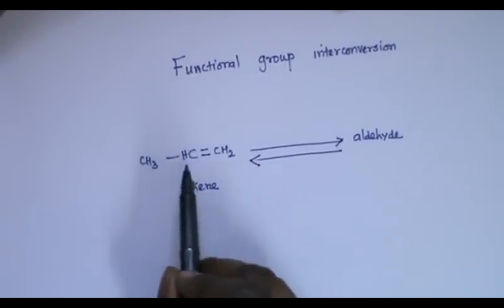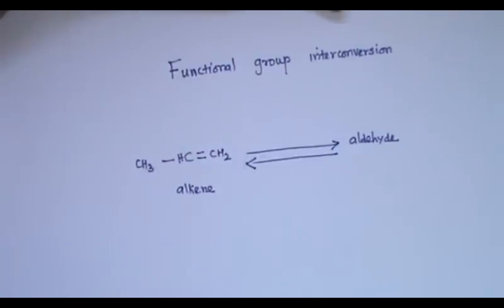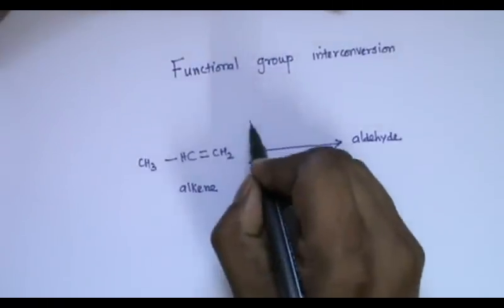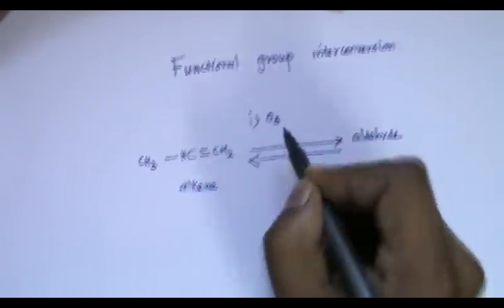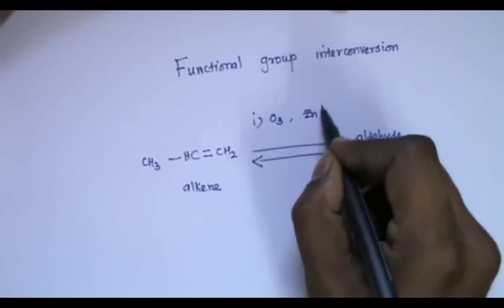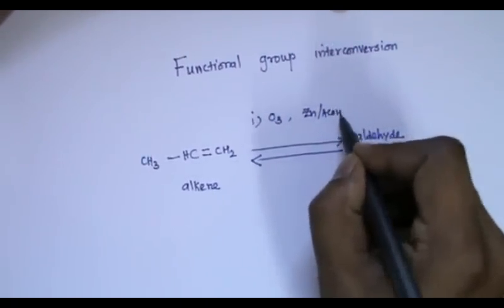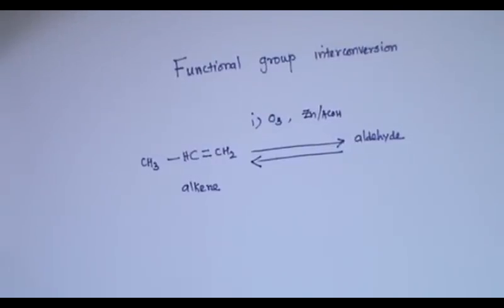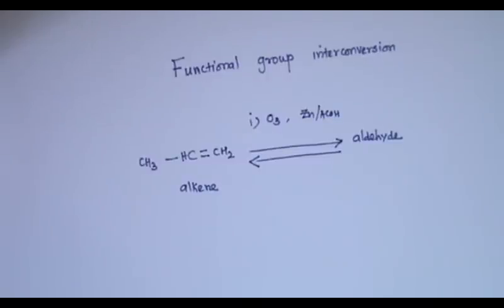To convert this alkene to aldehyde, I can go for ozonolysis followed by reductive workup. I will get aldehyde. So this is one method. I will get acetaldehyde and formaldehyde.